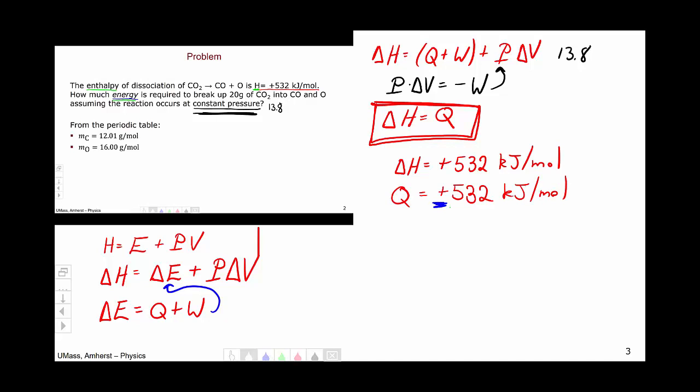Since the heat is positive, we know that I must put energy in as heat for the reaction to proceed, which should make some intuitive sense for us in this particular case. Carbon dioxide doesn't just spontaneously dissociate. I have to put energy into the process to make it go.